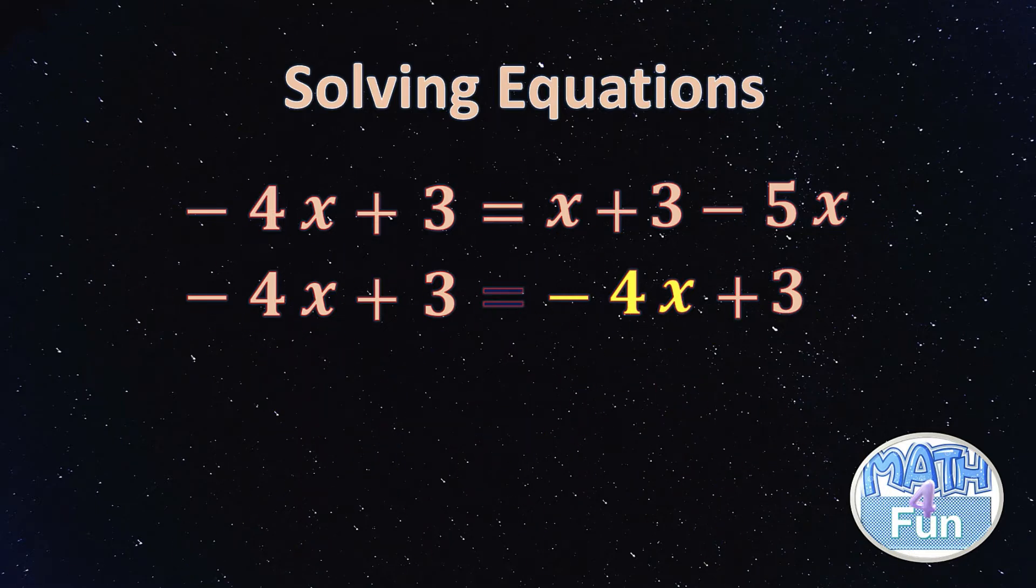But if you want to solve it, look what you can do. Now we want to move variables to one side and numbers to the other side. We have -4x and -4x on each side, and we have +3 and +3 on the other side. We can add -3 on each side to remove the 3.